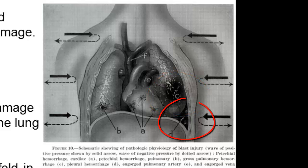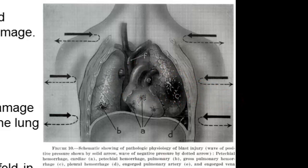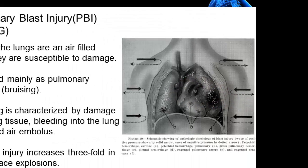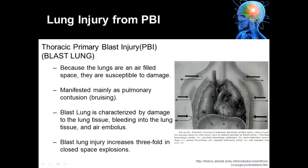Image B shows gross pulmonary hemorrhages — a significant amount of blood that has leaked into the lung tissue. C is pleural hemorrhage, which is bleeding into the space between the lungs and the chest wall. D is engorged pulmonary arteries, and E is an engorged large vein within the thoracic cavity. As you can see, a number of different types of injury can occur in the lung tissue, and greater injury to the lungs can result in critical condition or even death.